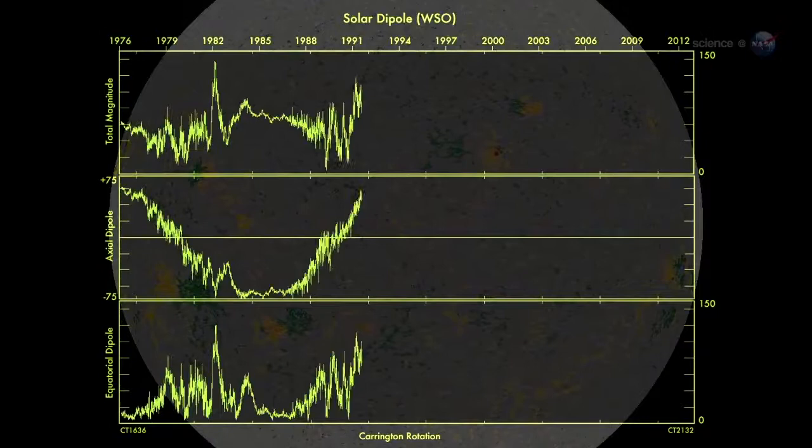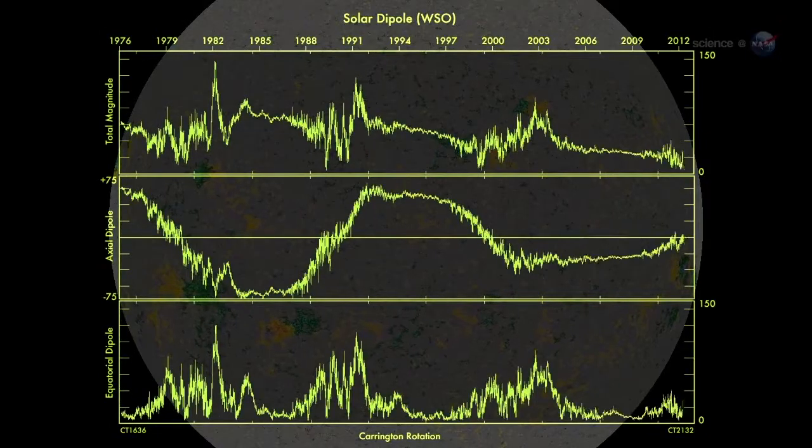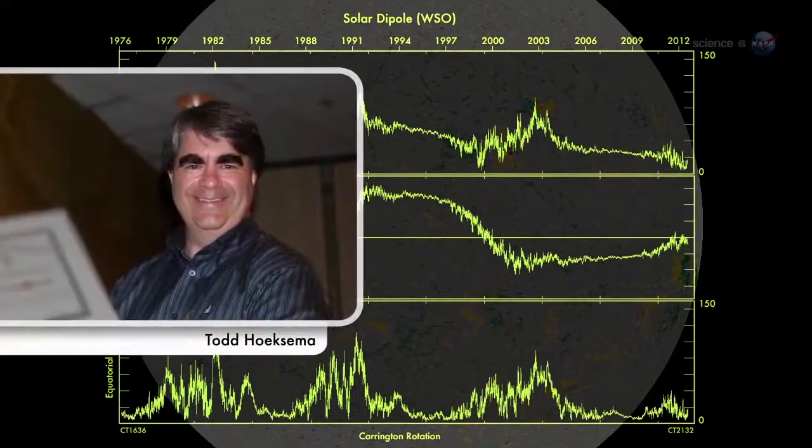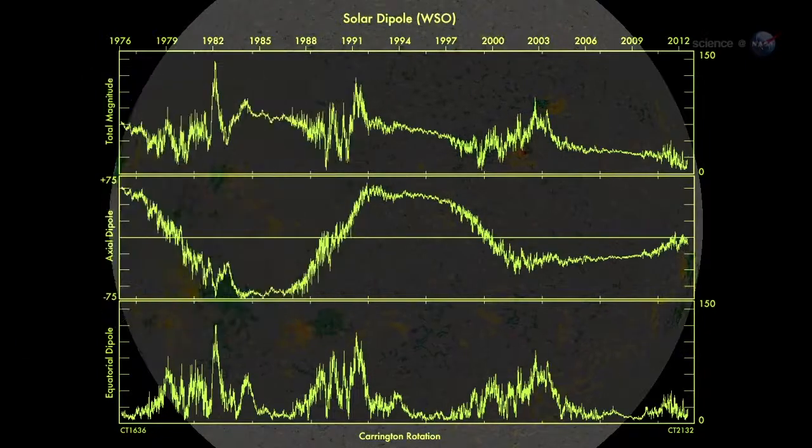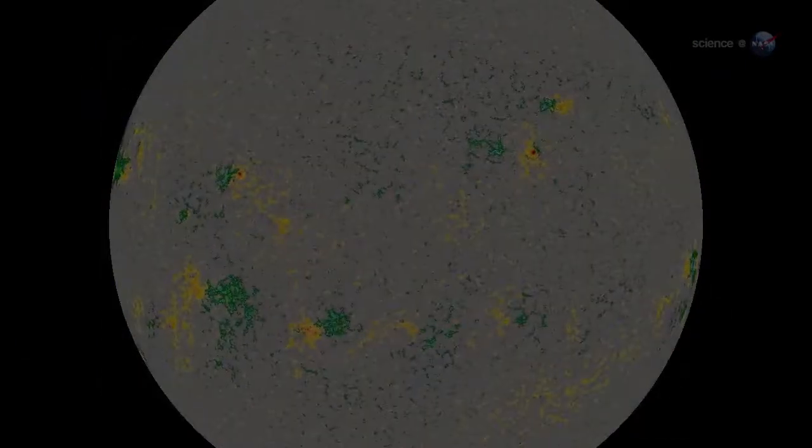It looks like we're no more than three to four months away from a complete field reversal, says solar physicist Todd Huxama of Stanford University. This change will have ripple effects throughout the solar system.